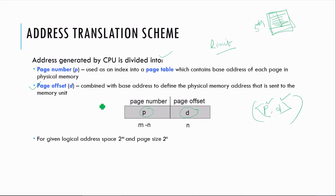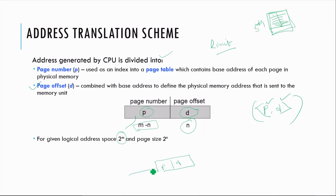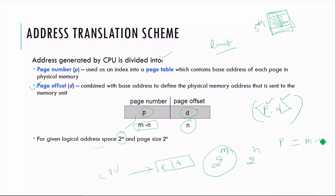Using indexing, we can calculate: if the logical address space is 2 to the power m, and the page size is 2 to the power n, then the page number p is calculated as m minus n bits, and the page offset d is n bits. So the address is a combination of p and d.